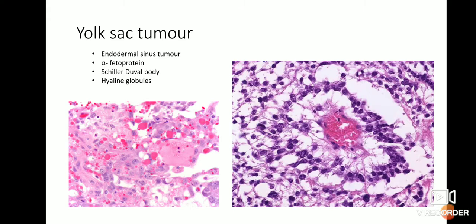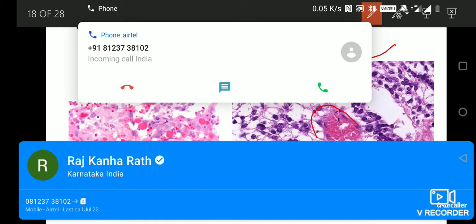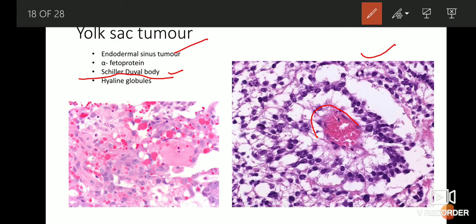Another common germ cell tumor is the yolk sac tumor. Yolk sac tumors occur at a very early age, before puberty — usually within 10 years of age in the ovary. They are also known as endodermal sinus tumor. The serum tumor marker for this tumor is alpha-fetoprotein, and these patients usually have an alpha-fetoprotein level in excess of 1000. A characteristic feature is the presence of a peculiar structure known as Schiller-Duval bodies. There is a central blood vessel surrounded by a row of cells with a clear area in between.